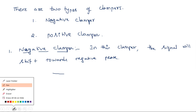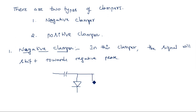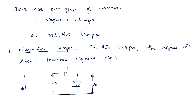Now let us see how the negative clamper is constructed. The circuit has a capacitor followed by a diode which is in the forward direction — this configuration acts as a negative clamper. The input voltage is applied to this circuit.